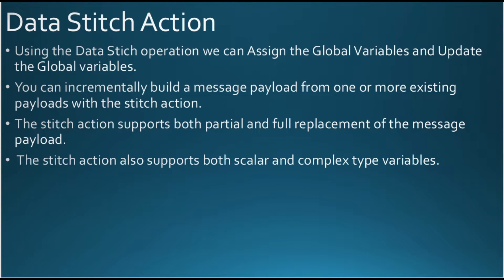Let's discuss the data stitch action. Using the data stitch operation, we can assign and update global variables. You can incrementally build a message payload from one or more existing payloads with the data stitch action. In real-time, there are requirements where you get payloads from multiple sources but want to combine all payload lines into a single payload — that is the scenario where we use the data stitch action. The data stitch action supports both partial and full replacement of the message payload, and supports both scalar and complex type variables.